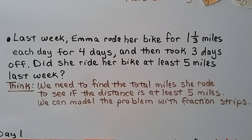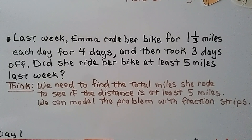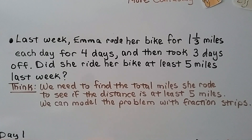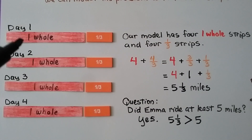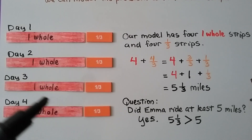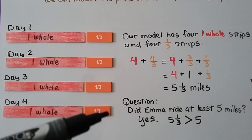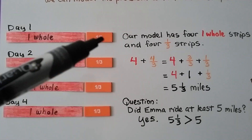Last week, Emma rode her bike for 1 and 1/3 miles each day for 4 days, and then took 3 days off. Did she ride her bike at least 5 miles last week? We need to find the total miles she rode to see if the distance is at least 5 miles. We can model the problem with fraction strips. She rode 1 and 1/3 miles each day for 4 days, so we have four strips of 1 and 1/3.